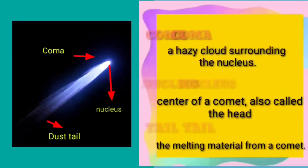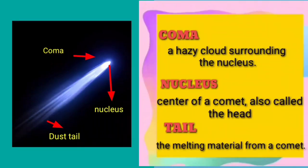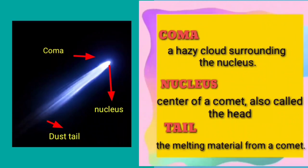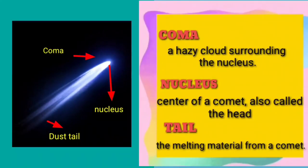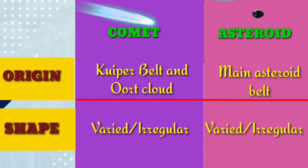Parts of a Comet. Now let us compare asteroids from comets based on origin, shape, orbit, size, and chemical composition. The comet is found in the Kuiper Belt and Oort Cloud, while the asteroid is found in the main asteroid belt.